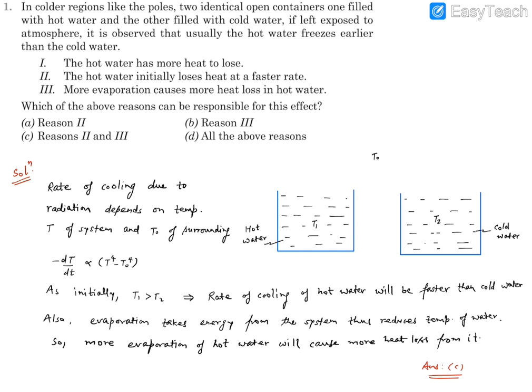Then apart from this radiation losses, you'll find initially this is at a higher temperature, then you'll find this will have more evaporation. Since it has more evaporation and we know in evaporation process, liquid gets converted into gas. Now to convert the liquid into gas, some heat has to be supplied for that liquid to convert into gas. So let's say a certain portion gets converted into gas.